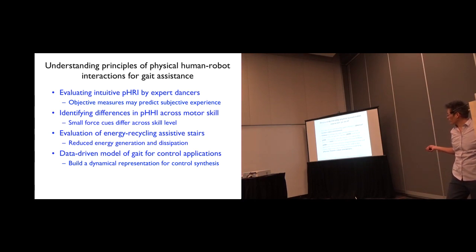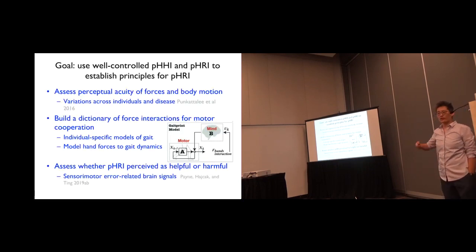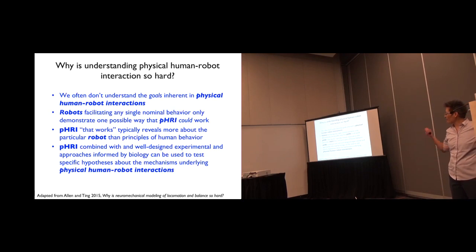So we're trying to build a dynamical representation to go back and try and see if we can look at well-controlled physical human-human robot interaction and human interaction to look at some principles of gait. So one thing you might think about is perceptual acuity. How well do I have to design my robot if people actually can't tell the difference between certain angles of force? Build a dictionary of force interactions for motor cooperation based on these forces at the hand. And then also maybe look at EEG signals to see whether these physical human robots are perceived as helpful or harmful.